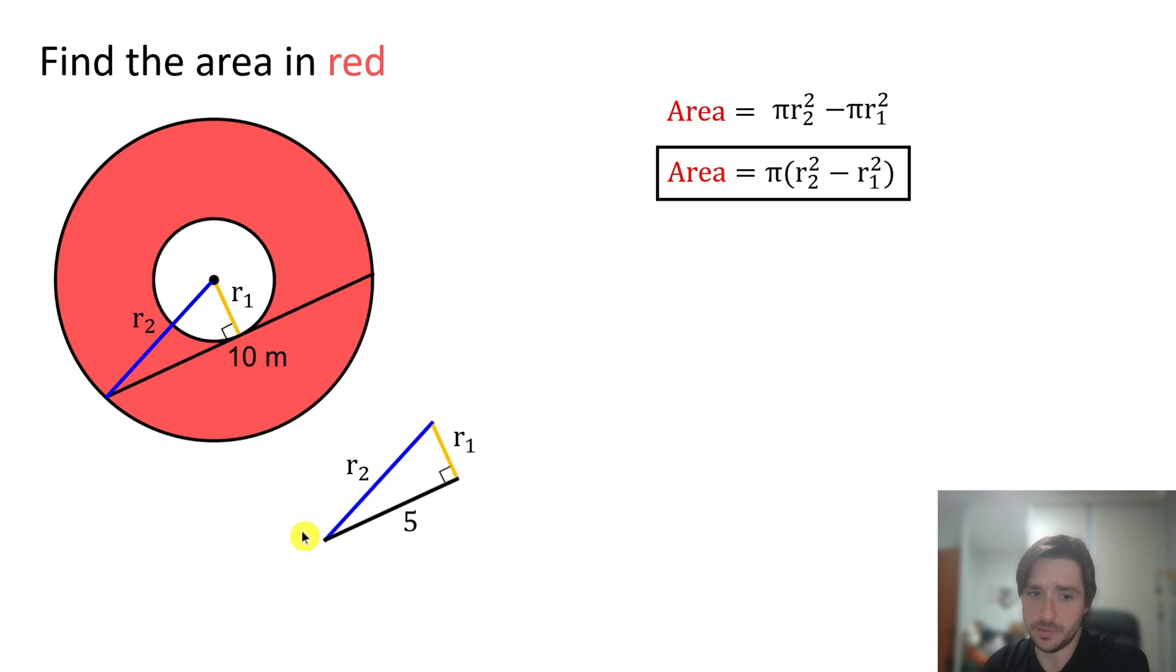So applying the Pythagorean theorem in this right triangle, we obtain that r1² + 5² = r2². 5 squared is 25. So now we can pass the r1² to the other side with a negative sign to see that 25 = r2² - r1², which is the expression that appears in the area.